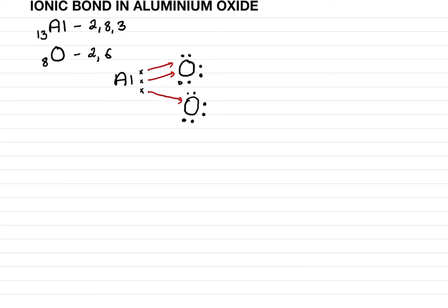Still, that oxygen needs one more electron, so we add another aluminium with three electrons — one, two, three. That aluminium gives its one electron, completing that oxygen's octet. But the second aluminium still has two electrons extra, so we draw a third oxygen with six electrons, and those two electrons transfer to complete it. Now all conditions are fulfilled: aluminium transfers two electrons to each oxygen, and each oxygen receives two electrons, completing its octet.